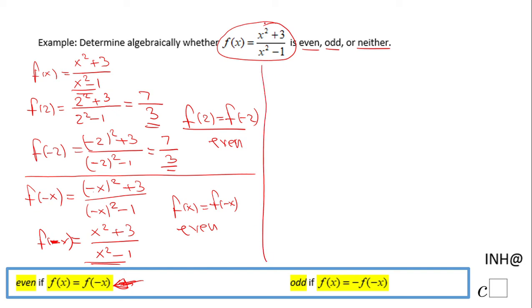Now some of you may notice that this function f(x) is a quotient of two even functions. Yeah, x² + 3 is an even function, x² - 1 is an even function. Whenever you have this situation, the outcome will be an even function. It's like a sign rule. Similarly, if you have odd function over an odd function, you're gonna have an even function.